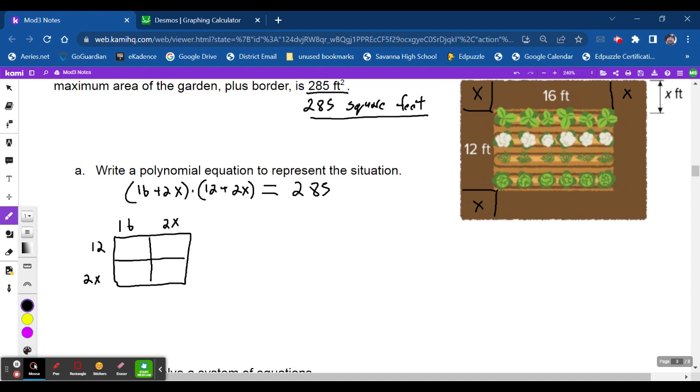This can actually be written like this. So I'm going to get 12 times 2x is 24x. 16 times 2x is 32x. And 2x times 2x is 4x squared. Now I'm having a little trouble with this 12 times 16. So I'm going to do another one. So 16 times 12 will be whatever this is, which would be 192.